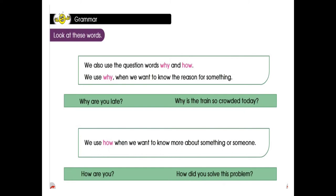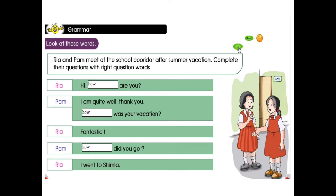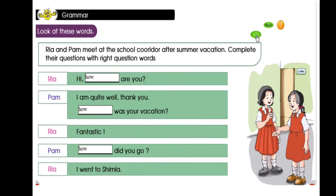Next, Rian and Pam met at the school corridor during summer vacation. We have to complete their conversation with the right question words — how, when, where, what. These are the words we have to put in the blank boxes. It's on page number 22. Look and answer it properly.